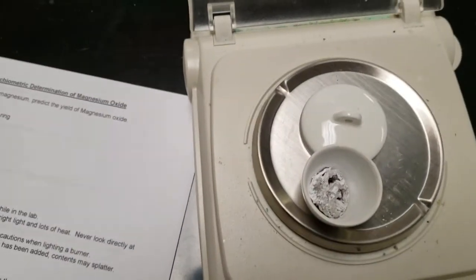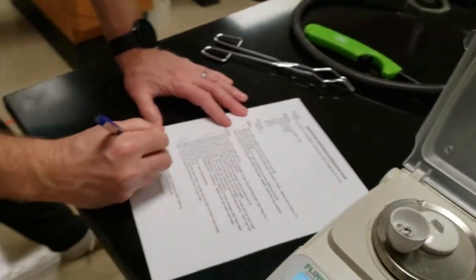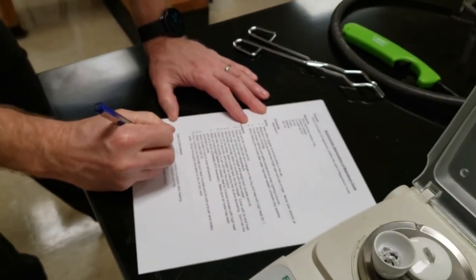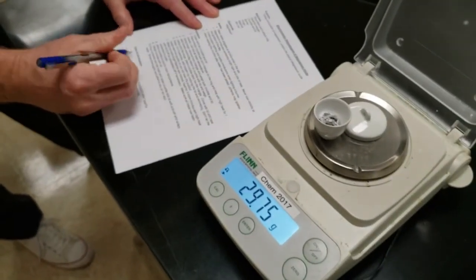We're going to weigh it again, zero the scale out, use the same scale, make sure you measure it with the crucible lid as well and write down the number.